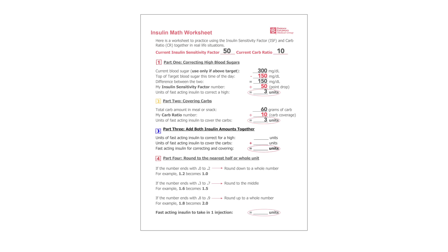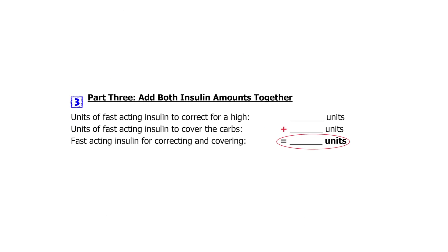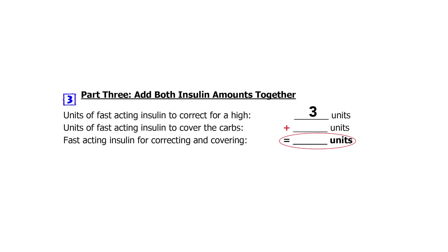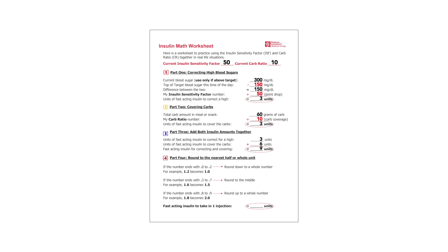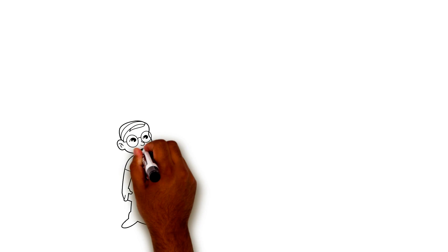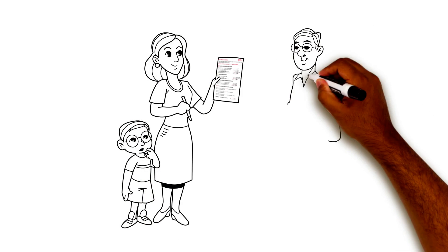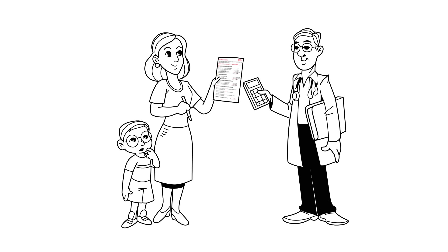Now we are at Part 3: add both insulin amounts together. Write the units of insulin to correct high blood sugar and the units for covering carbs. Add these two together and you get the total amount of fast-acting insulin for the injection. Part 4 is for rounding to the nearest half or whole unit. You will be drawing up insulin using either half or whole units, so you might need to round up or round down in Step 4. You will be able to practice this math with your diabetes team — they will work with you until you are comfortable calculating insulin on your own.